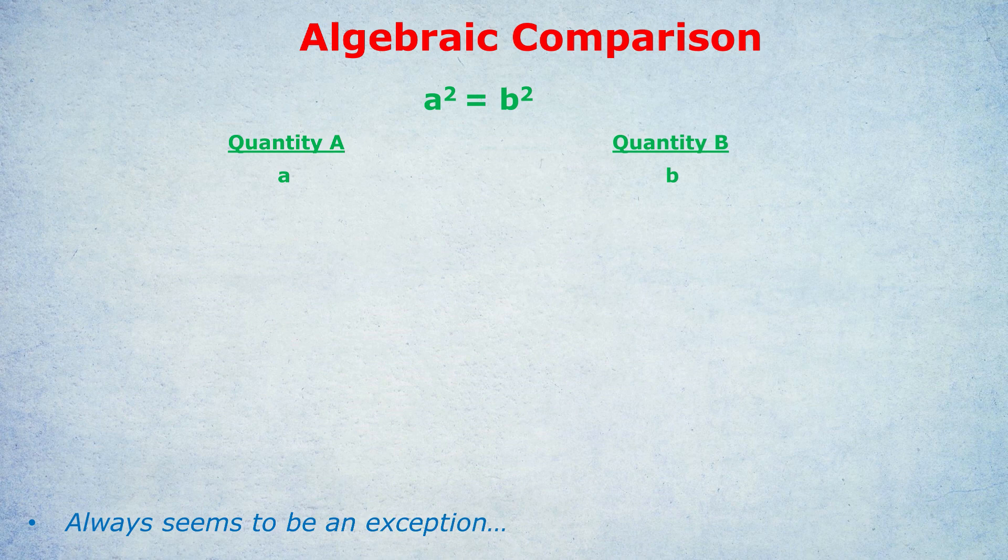For this first question, we're told that A squared equals B squared. What is bigger, quantity A or quantity B? The answer choices for all five questions are: A — quantity A is bigger; B — quantity B is bigger; C — both quantities are equal; or D — we can't tell which one is bigger.